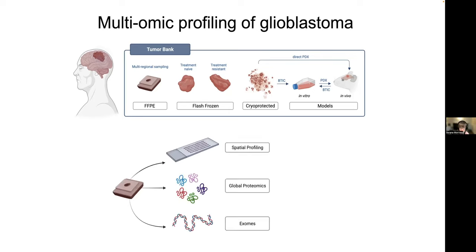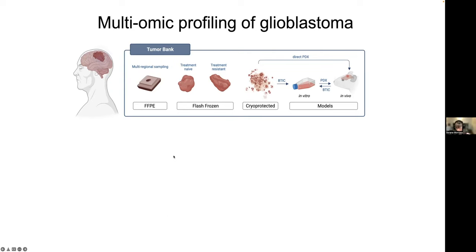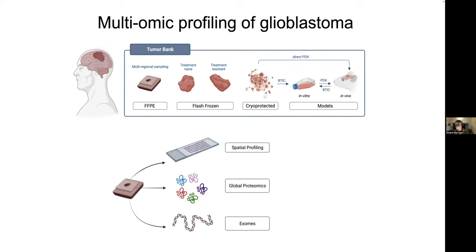I want to focus on a project we started a while back where we've taken a cohort of patients for which we have multi-regional and longitudinal sampling from FFPE material. In this cohort, we have these FFPE blocks taken around the tumor core, edge, and so on, before and after therapy. From the same block, we take core punches and array them on a tissue microarray so that one TMA can represent the whole cohort of patients. For this, we've done spatial profiling, and from the very next core we do global proteomics, and from the next, exomes.